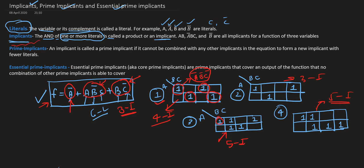Now let us talk about prime implicants. Prime implicants are first of all implicants. So an implicant is called a prime implicant with some condition. That condition is: if that implicant cannot be combined with any other implicant in the equation to form a new implicant with fewer literals.